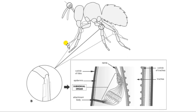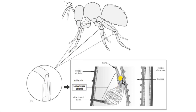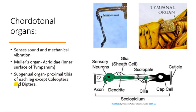The subgenual organ detects any vibration in the substrate — wherever the insect lands, it senses vibrations through this subgenual organ, which is a chordotonal organ. It is present in all insects except Coleoptera and Diptera.